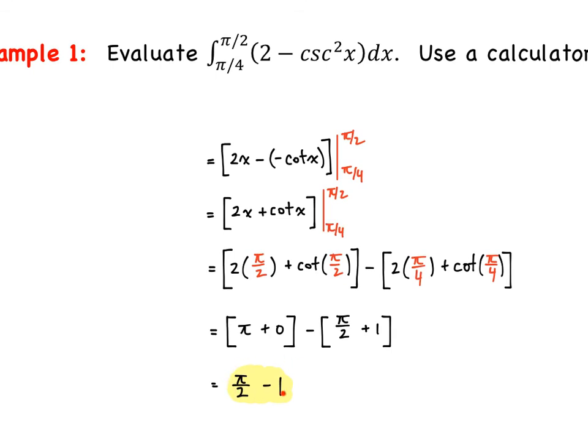Okay, so did you get π/2 - 1 as your final answer? Let's see how we did. Integrating 2, we get 2x. Integrating csc²x, it's -cot(x). So this cleans up to 2x + cot(x), and now we're evaluating it on our interval from π/4 to π/2. We plug in π/2 and subtract when we plug in π/4. Remember that cot(π/2) = 0 and cot(π/4) = 1. So cleaning everything up, you get π/2 - 1. If you have questions on any of the algebra, let me know.